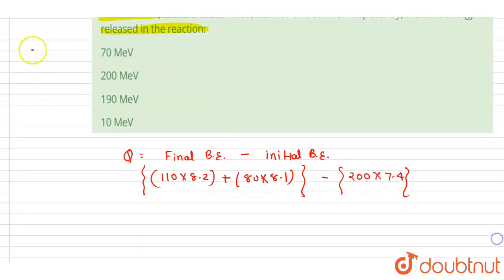If you solve this, 110 into 8.2 will be 902, plus 80 into 8.1 is 648. This is the binding energy of the product. Minus, I will do the initial one, the parent one.